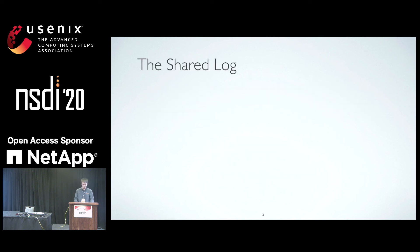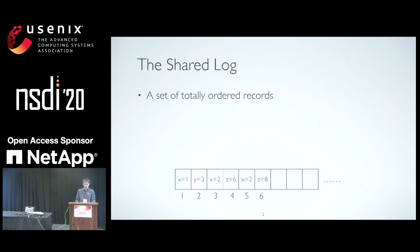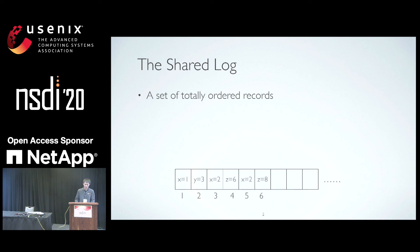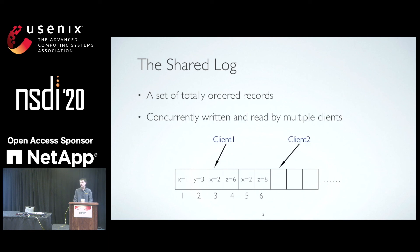Before going into how ScaleLog achieves these results, let's agree on the basics. First, a log is a repository of totally ordered records. As shown in this figure, each record is associated with a sequence number, which represents the record's position in the log. A log is shared when it can be concurrently written and read by multiple clients.